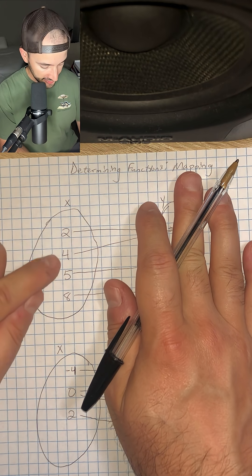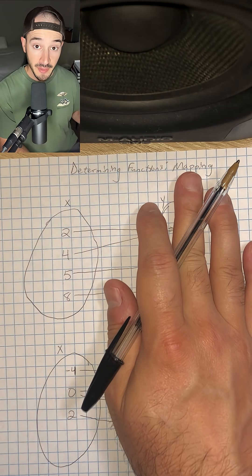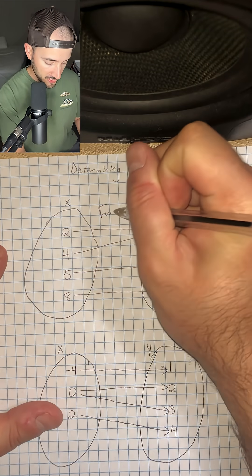And it looks like that's the case. Each number only has one line leaving from that x value, so this one is a function.